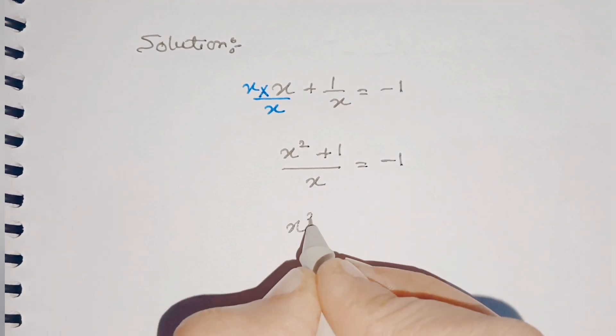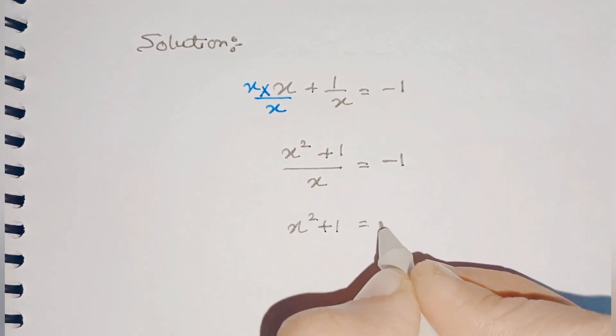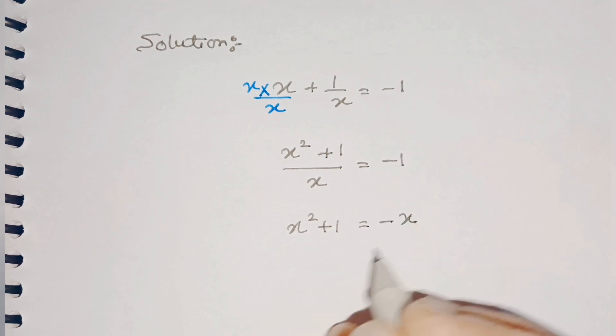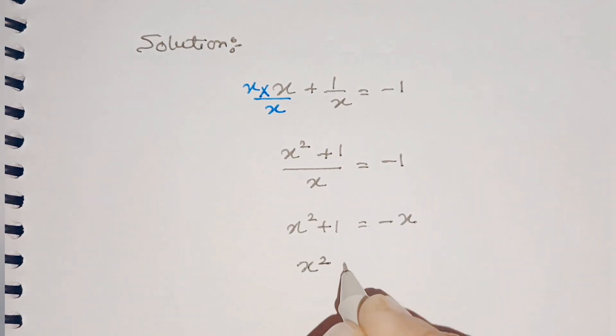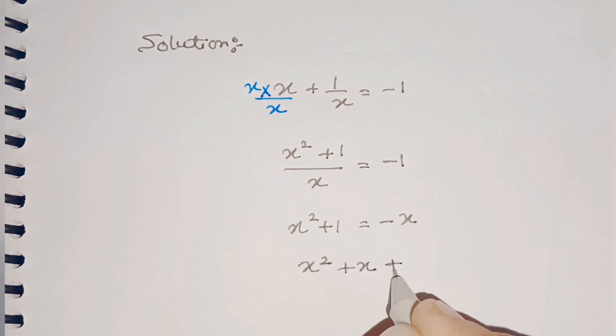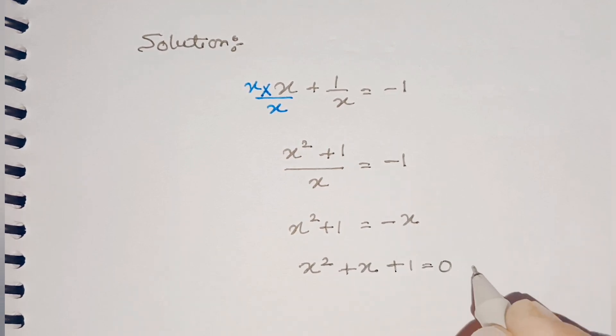Move x to the right-hand side. So this will be x² + 1 = -x. Let's write in standard form of quadratic equation. So this will be x² + x + 1 = 0. We mark it as equation 1.